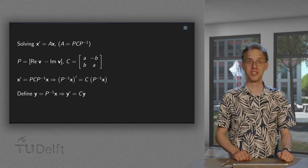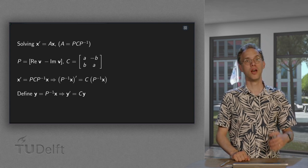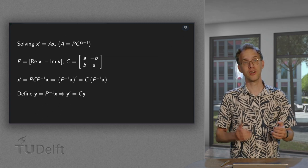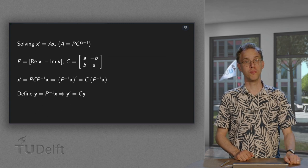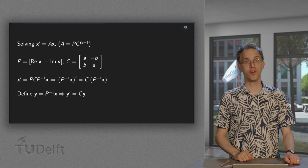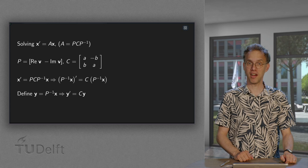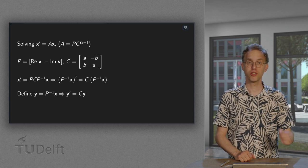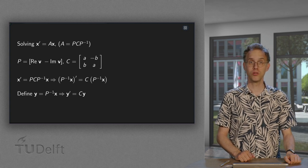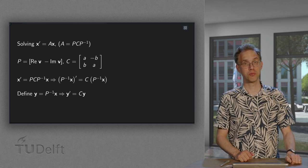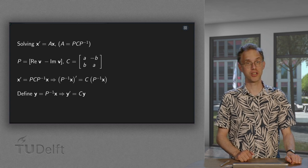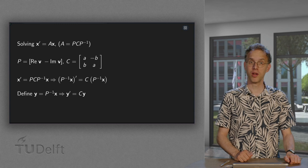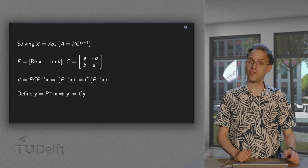How can we solve x' = Ax if A has complex eigenvalues? We will do this in the 2x2 case. In this case we know that A is similar to a scaling rotation matrix C. In a linear algebra course you may have learned how to do this. In this video we will review the steps, which will give us a complicated final expression for two independent solutions. Similar to the diagonalizable case, we recommend memorizing this final expression so we can do computations faster and more smoothly.